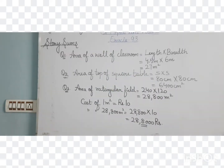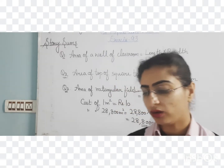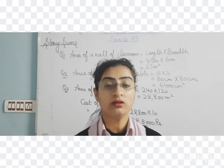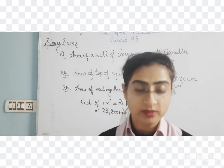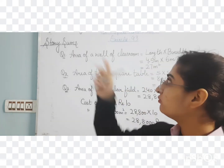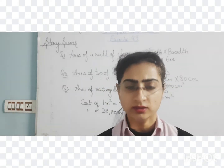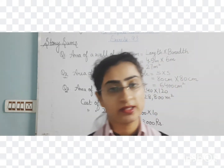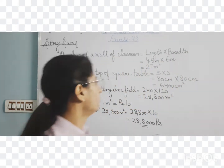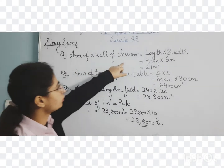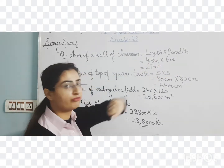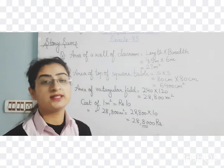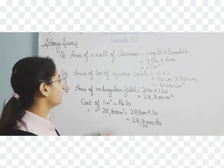The first question: find the area of a wall of a classroom 4.5 meters high and 6 meters wide. The wall is a rectangle, so area equals length multiplied by breadth. Length is 4.5 meters and breadth is 6 meters. Multiplying gives 27 meter square. Easy.